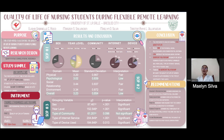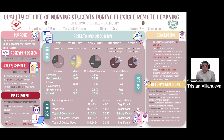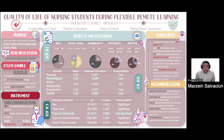The profile variables include sex, year level, type of community, type of internet service, and type of device used. For the research design, this study utilizes a quantitative correlational research survey method to assess and interpret students' quality of life during flexible remote learning.